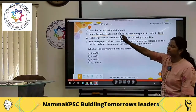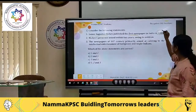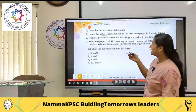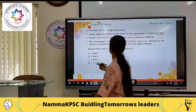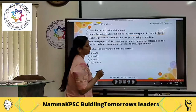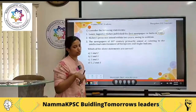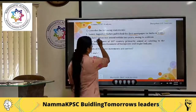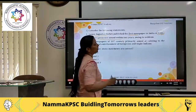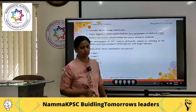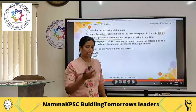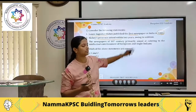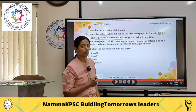So, these two things are known. And then, Hickey's press was seized within two years owing to sedition. Is this true? Yes, it is. Because in two years' time, he will go anti-British. Sedition means anything that is against the government. Therefore, this is also true.